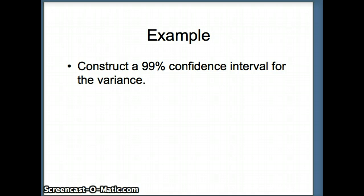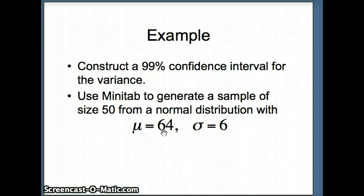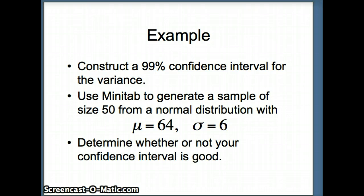Here's another example. This time we want to construct a 99% confidence interval for the variance. We'll use Minitab to generate our sample, since the procedure requires data from a normally distributed population. We'll ask Minitab for a sample of size 50 from a normal distribution with mean 64 and standard deviation 6. If sigma is 6, the population variance sigma-squared is 36, and we'll determine if our confidence interval is good based on whether it captures 36.